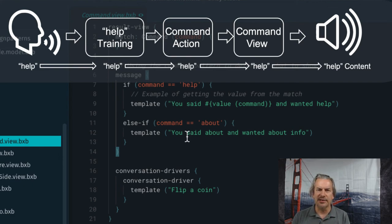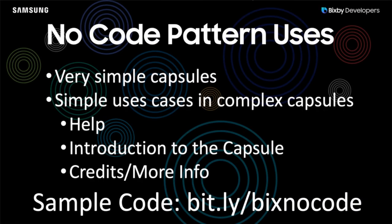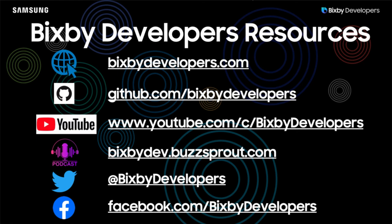When would you use these no-code design patterns? One: very simple capsules like this coin flipper — definitely a good place to use them. But also, even in a very complicated capsule with a lot of code, you're definitely going to use these design patterns for simple things like help, an introduction when the user first starts using the capsule, credits, more information, and so on. You can get all this sample code at bit.ly/BixNoCode.